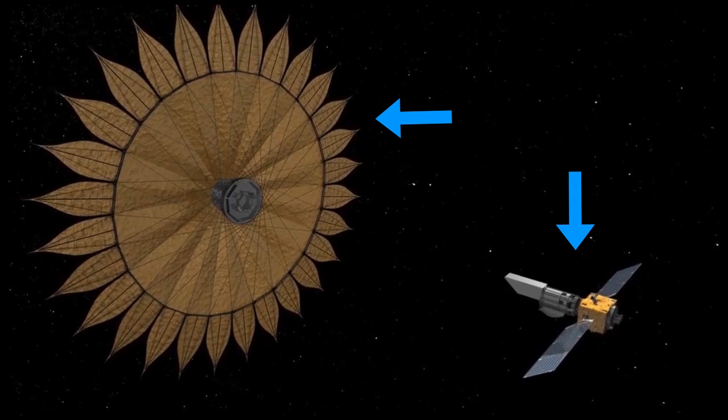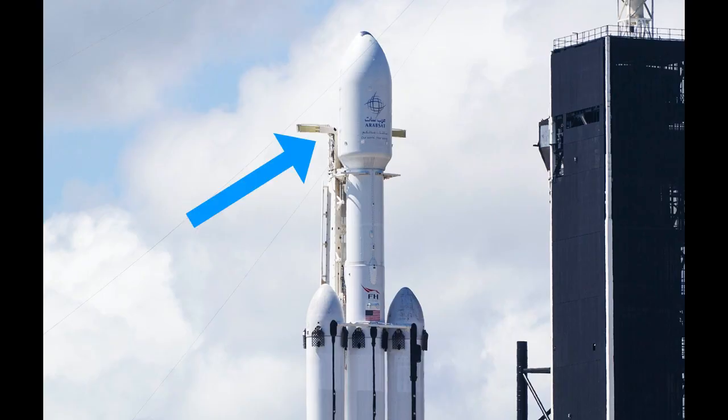It's responsible for shading the telescope from sunlight. The problem is, the starshade needs to be about 111 feet across. But it has to fit right here, in the top of a rocket, and that is only 17 feet across.